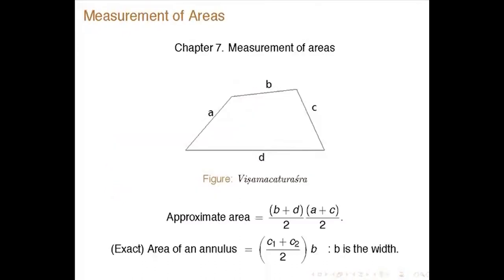For instance, if you have a Vishama Chatturashtra — any quadrilateral where there is no relation among the various sides a, b, c, d — that is the Vishama Chatturashtra. The approximate area, as in Brahmasphuta Siddhanta, is given as (b + d)/2 × (a + c)/2 — approximate area.